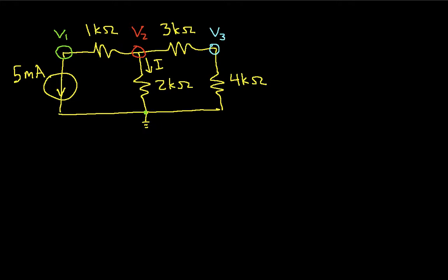So if we look at node 1, where we have V1, using the pattern that we talked about in the introductory videos on nodal analysis, we can actually just write down what this equation would be. It will be V1 over 1kΩ minus V2 over 1kΩ is equal to negative 5 milliamps. And the negative in front of the 5 milliamps indicates that the current is leaving the node rather than entering the node.